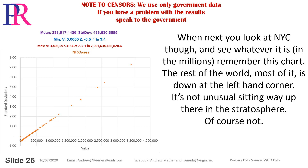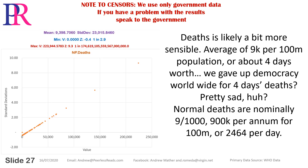When next you look at New York City and see whatever it is in the millions, remember this chart — the rest of the world, most of it, is down at the left-hand corner. It's not unusual sitting way up there in the stratosphere. Deaths is likely a bit more sensible: average of 9,000 per 100 million population, or about four days' worth. We gave up democracy worldwide for four days' deaths — pretty sad.